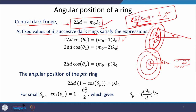The condition for the central ring corresponds to order m₀, the next dark ring to m₀ − 1, then m₀ − 2, and so on with corresponding angles θ₁, θ₂, etc. For the p-th ring, θ equals θ_p and the order number is reduced by p. We can write this relation for all dark rings appearing in the field of view.